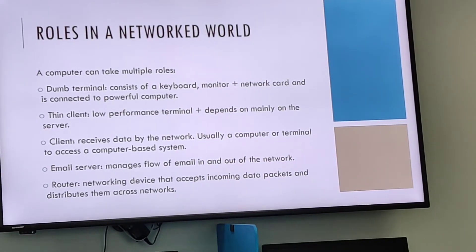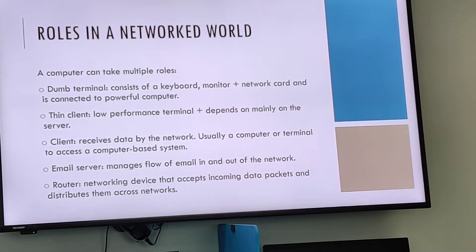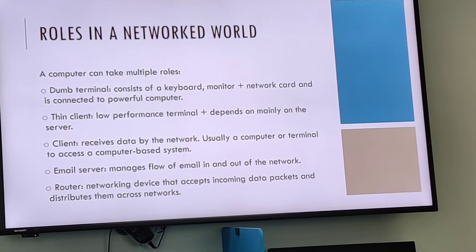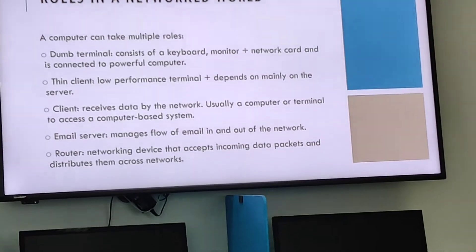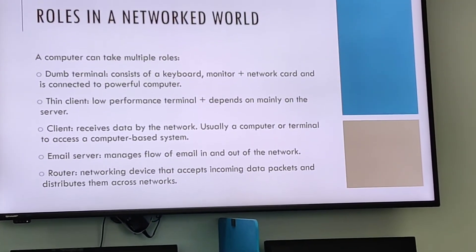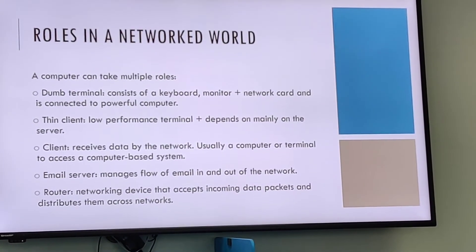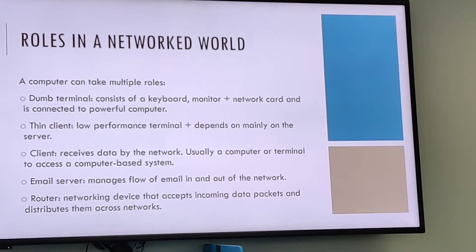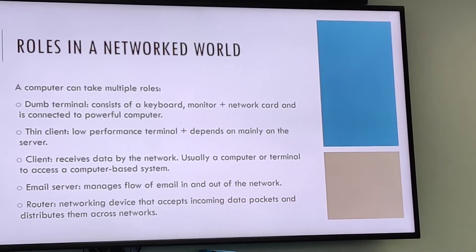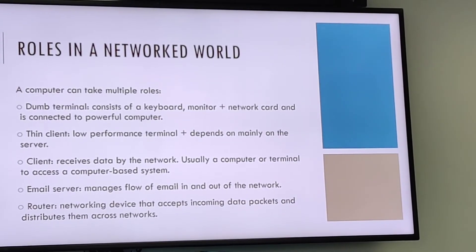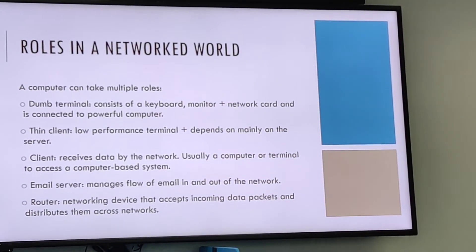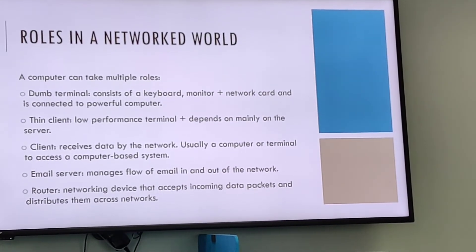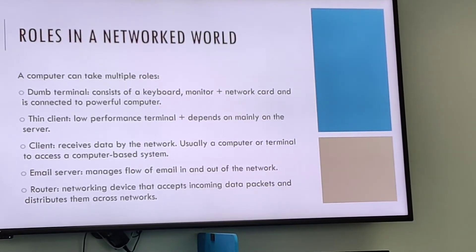An email server is the equivalent of a post office that manages the flow of email in and out of the network, checks that an email address is valid, and allows users to access their email and more. A router is a network device that accepts incoming data packets, reads the destination address, and distributes them across networks according to a routing table or routing policy. A router identifies the destination of messages and sends them via an appropriate route, and is used to forward data packets between networks.